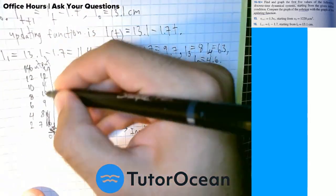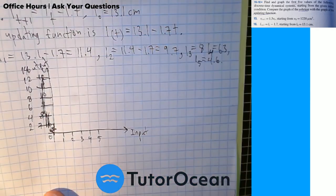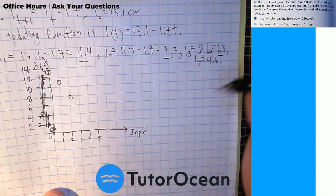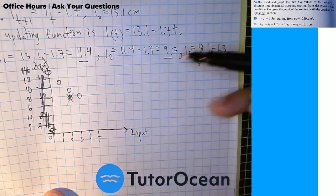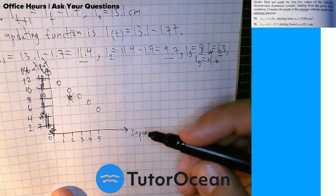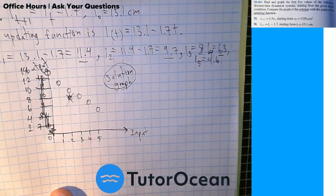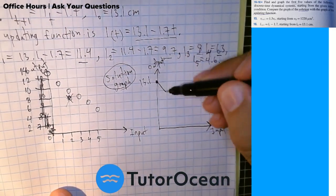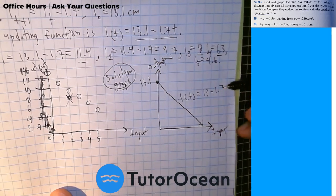Now we calculate the first five values of the discrete-time dynamical system to get L0, L1, L2, L3, and L4. Then we'll sketch the graph and then we'll sketch the updating function and compare.